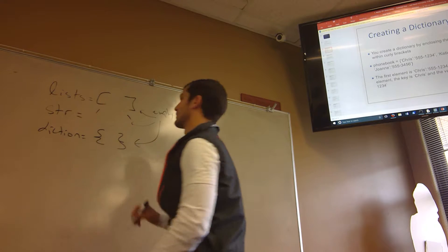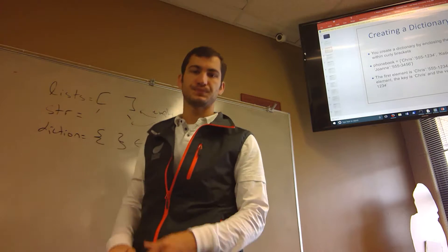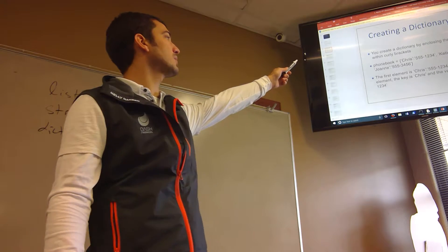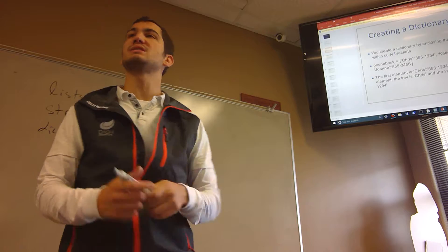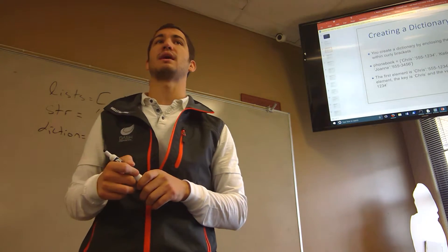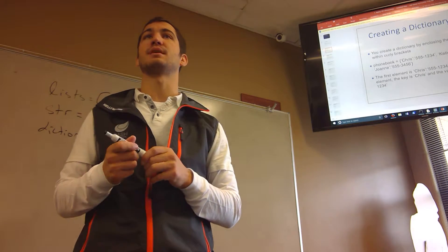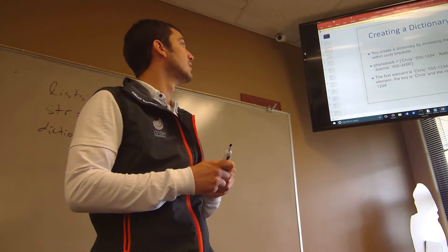Now with the dictionary, as you can see, I have my phonebook. I have Chris, so Chris is my key and then 555-1234 is my value. I have Katie which is my key and then 555 whatever 4234.